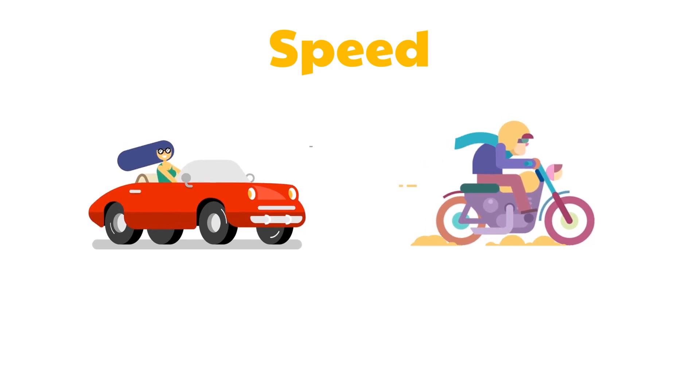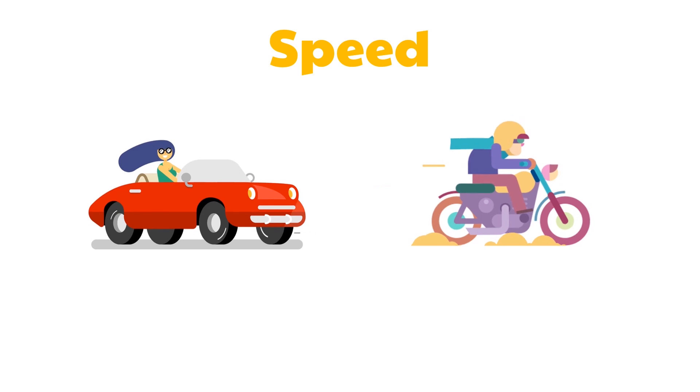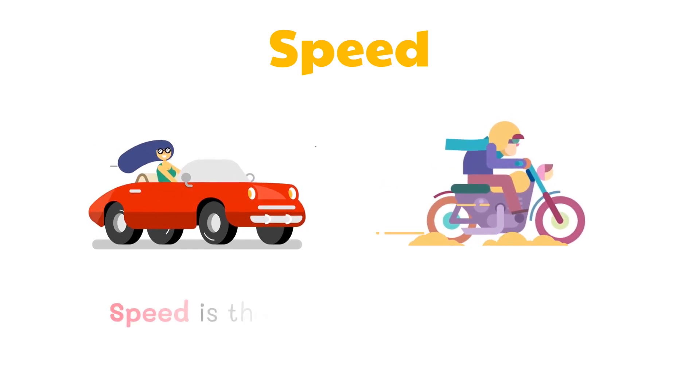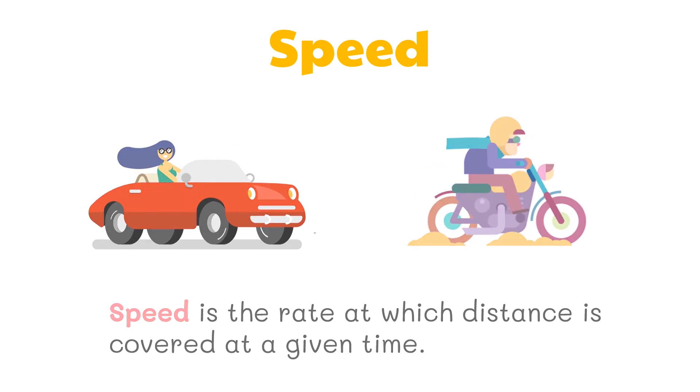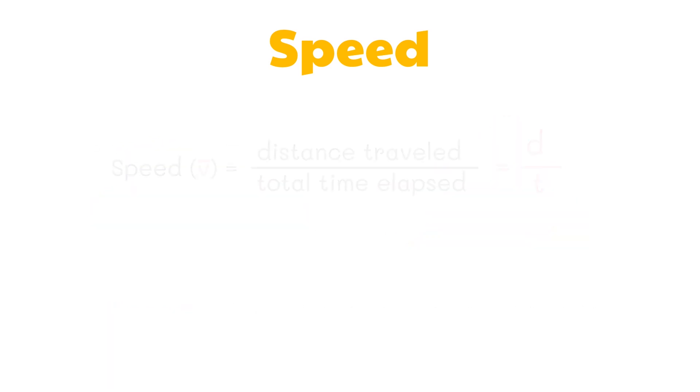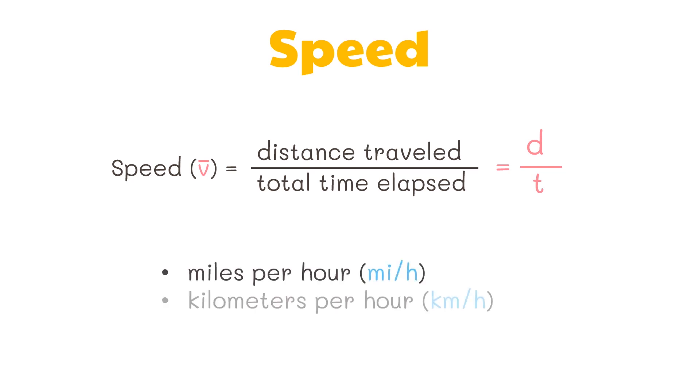People usually associate the term speed with fast-moving objects, such as high-speed cars and racing bikes. Speed is the rate at which distance is covered at a given time. Speed is calculated by the distance traveled divided by the time elapsed. We can express speed in terms of miles per hour, kilometers per hour, or meters per second.